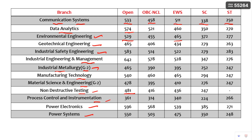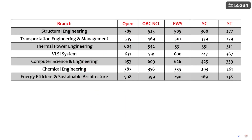Coming to the top branch in Civil Engineering, that is Structural Engineering — this cutoff is 585 in Open category, 525 in OBC Non-Creamy Layer, EWS is 500, SC is 368, and ST is 277. Next, Transportation Engineering and Management: Open category cutoff is 535. Next, Thermal Power Engineering, which is also one of the famous branches in Mechanical Engineering, has a cutoff of 604 in Open category.